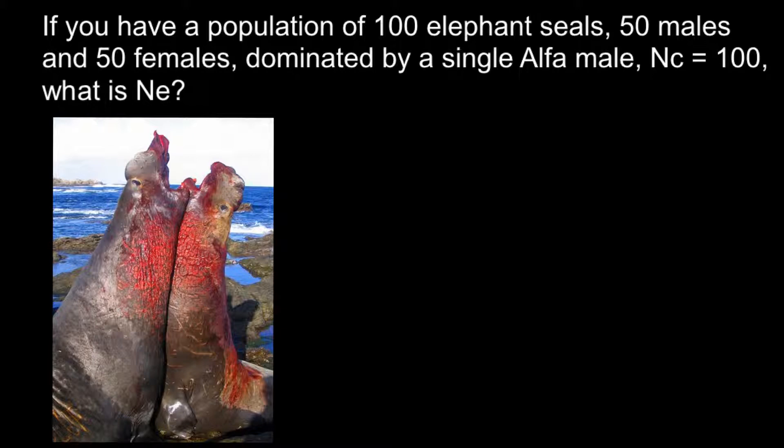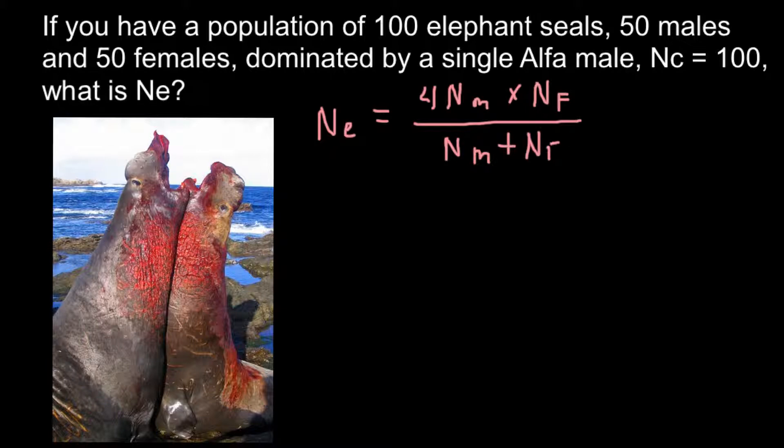First formula would be NE, effective population size. This formula we apply when we have just this balance between sexes. For example, we may have 70 males and 30 females, but all of them participate in the breeding. So, here is the formula: 4 times NM, and M here stands for the male, multiplied by number of females, and F here stands for the females, and divided by total number of males plus total number of females.